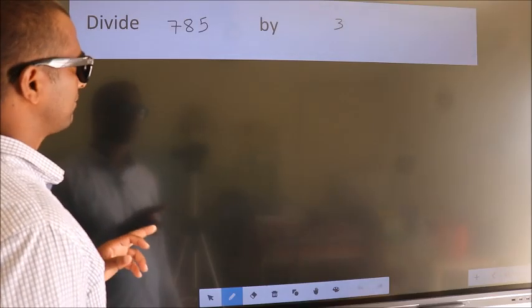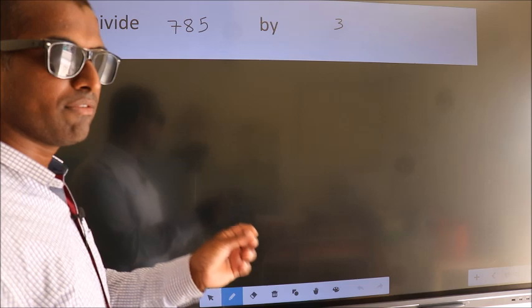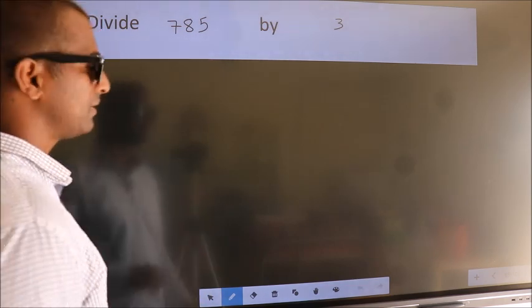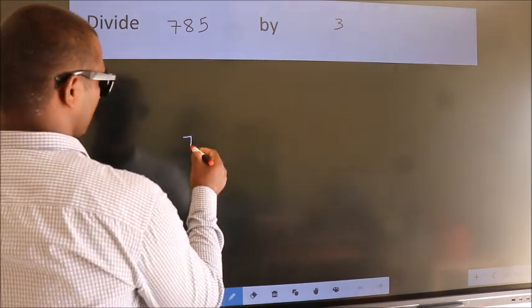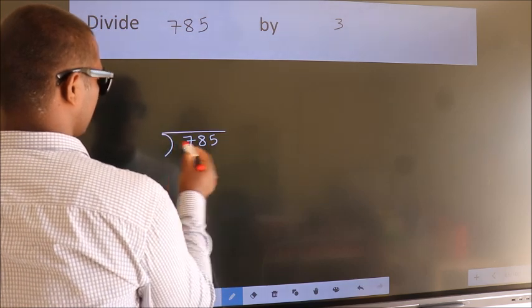Divide 785 by 3. To do this division, we should frame it in this way: 785 here, 3 here.